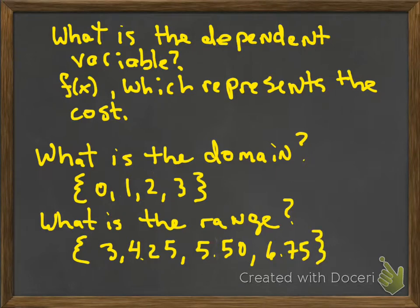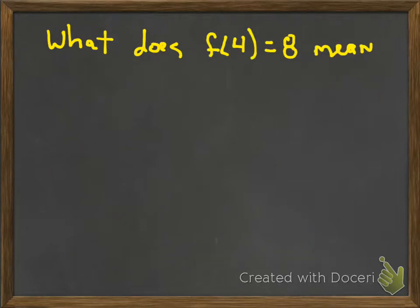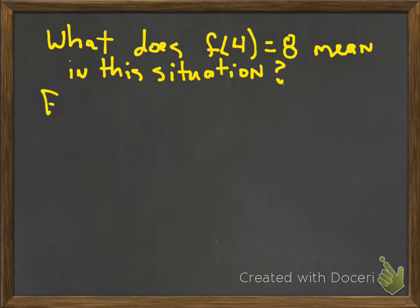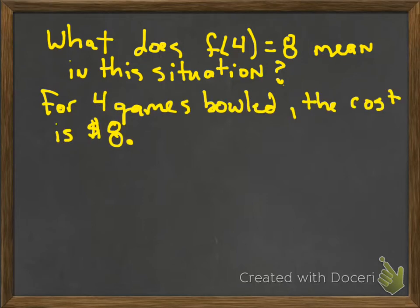And finally, let's look at this a little bit more. What does F of 4 equal 8 mean in this situation? Well, to me, what does the 4 mean? According to this, the 4 means how many games you bowl, because that represents the X. The 8 is the answer, which is the cost. So then that would tell me for 4 games bowled, the cost is $8. And there you go.